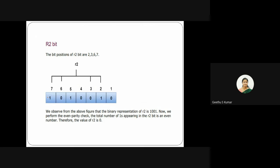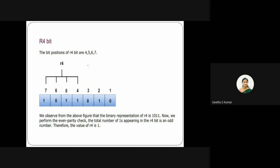For r2, positions 2, 3, 6, and 7 are checked. Counting gives 2 ones, which is even, so recalculated r2 equals 0. For r4, positions 4, 5, 6, and 7 are checked. Counting gives 3 ones, which is odd, so recalculated r4 is set to 1.